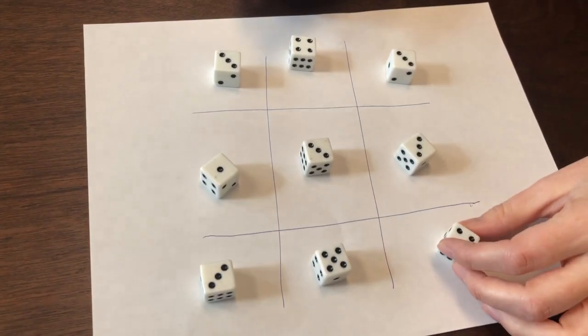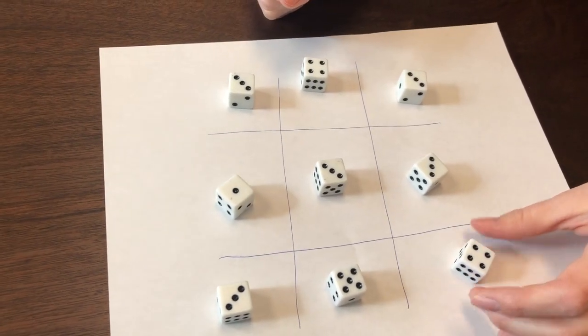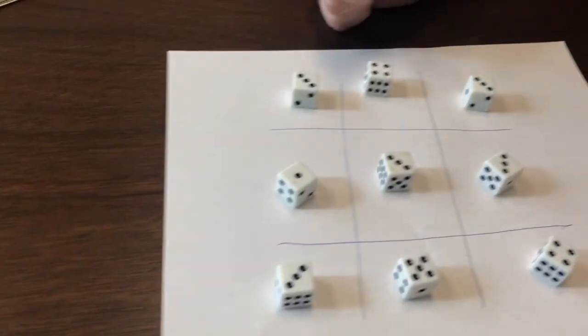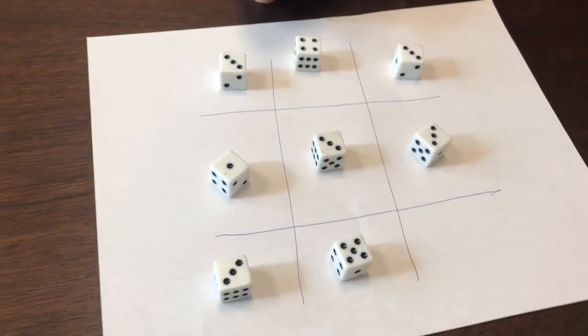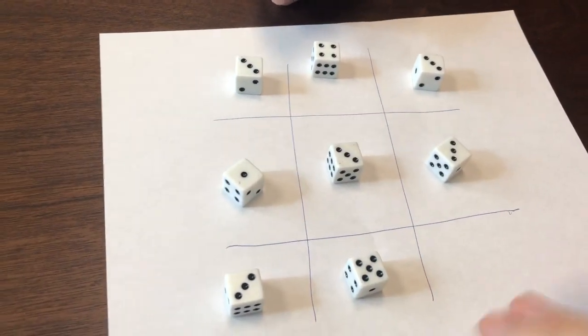What do you think? Alright, so it's a puzzle. All you need is a piece of paper, make a tic-tac-toe board, nine dice. Now you start throwing them in there and make all the answers the same, all the sums the same.